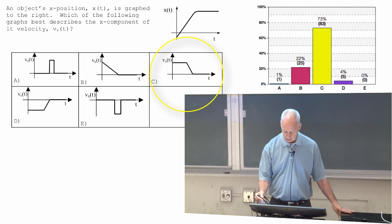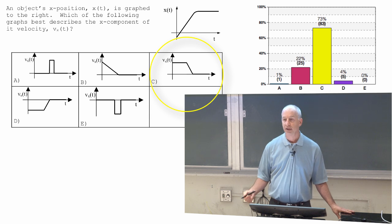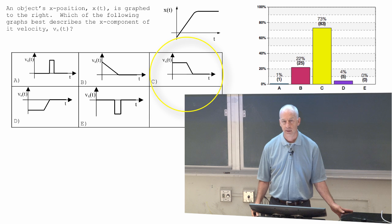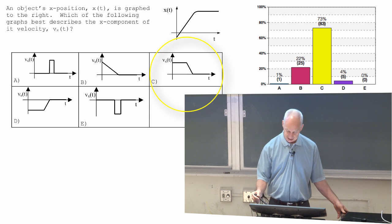That's what this v of x shows, a positive velocity and constant for a while. So that's what C shows here.